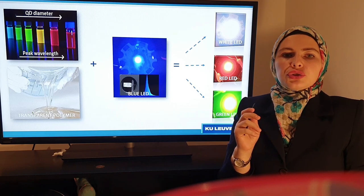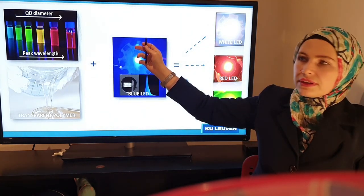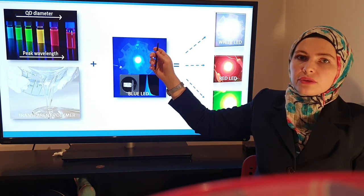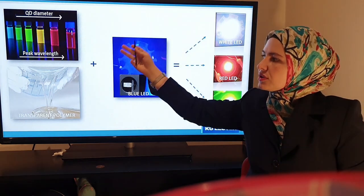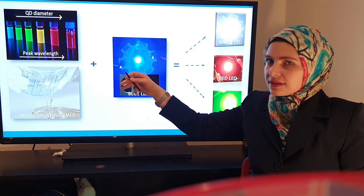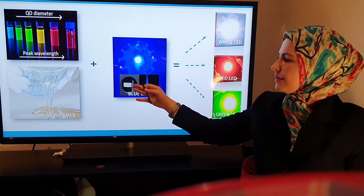The quantum dots usually come exactly as you can see in the picture, dispersed in solvent. Of course, the solvent has to be removed before their application on LEDs. So the quantum dots are mixed into the polymer matrix, imagine something like transparent glue, and then applied to the LED package.